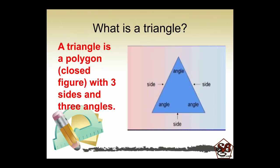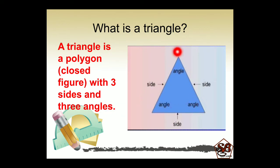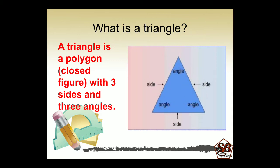What is a triangle? A triangle is a polygon, a closed figure with three sides and three angles. Here is the diagram of a triangle. It has three sides: one, two and three. And where two sides are meeting, an angle is formed there: one, two and three. So it is a closed figure with three sides and three angles.